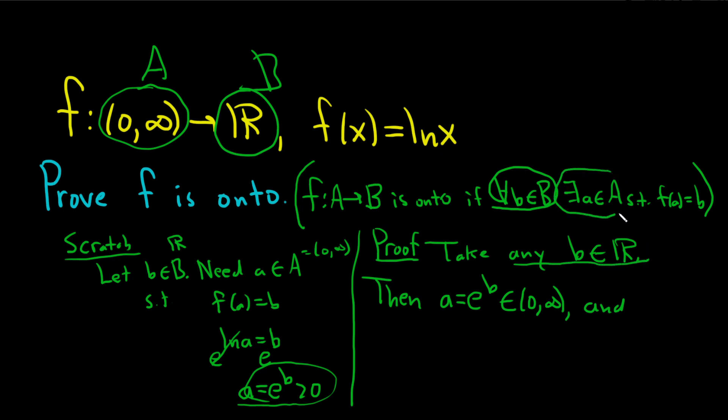We just did this part here, the existence, by taking this element. I said it was positive, so all is good. And now we're going to do this part here: f(A) equals b.